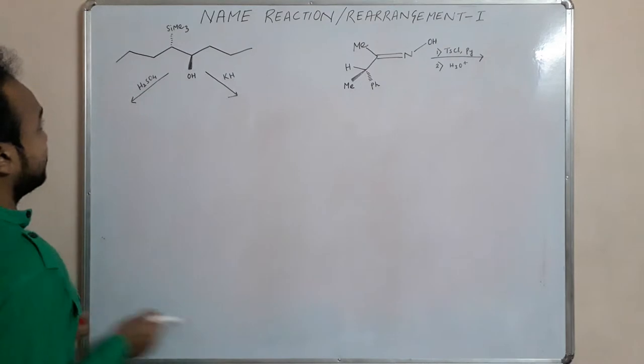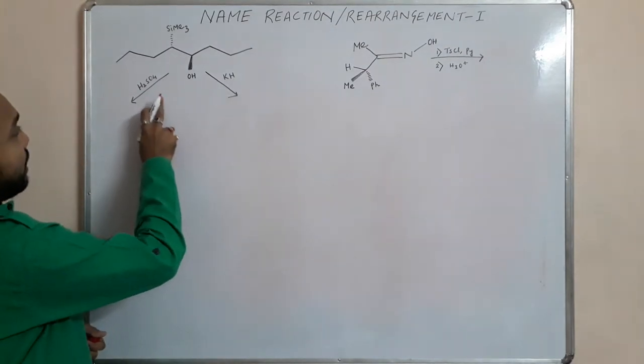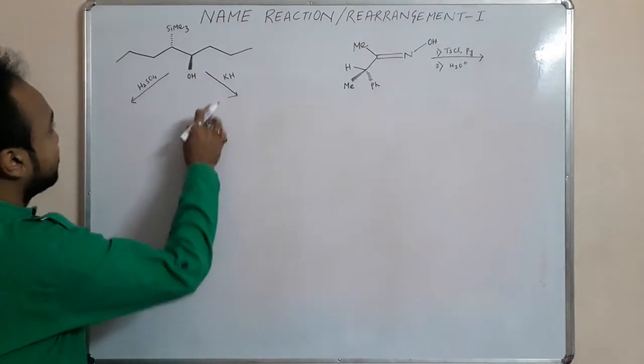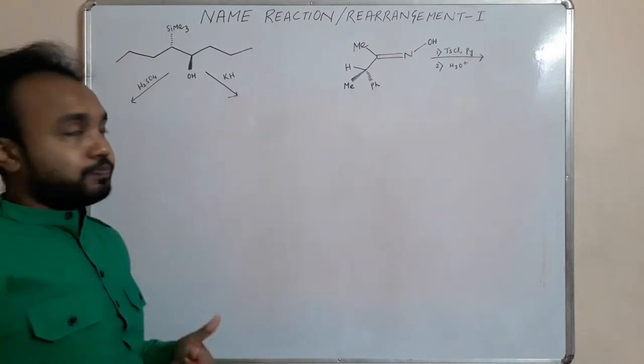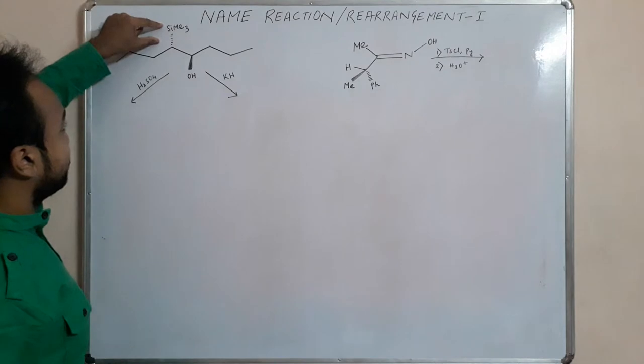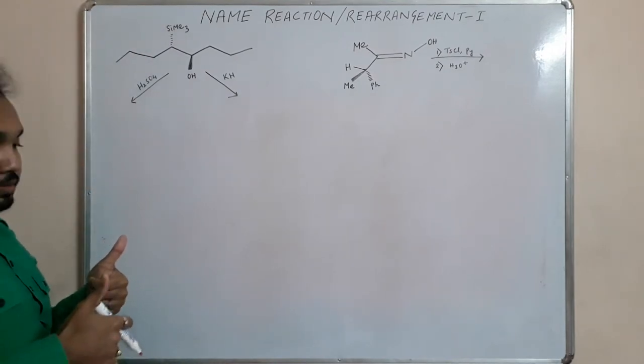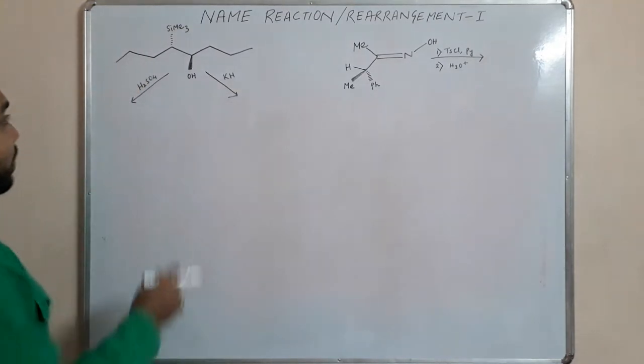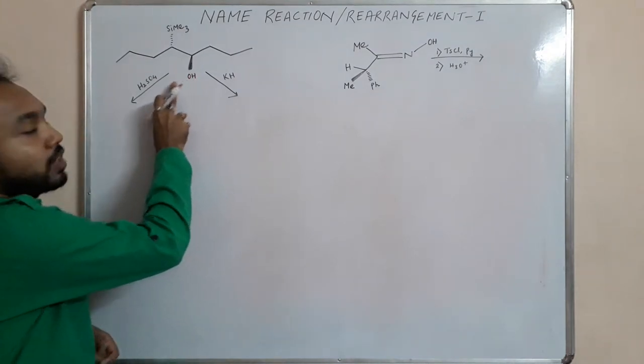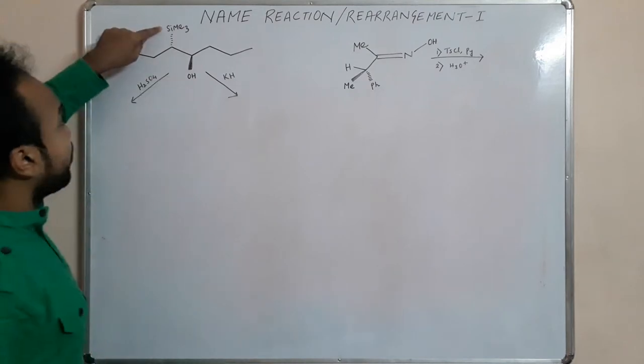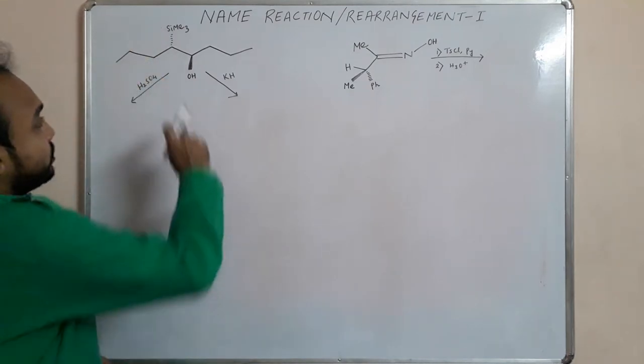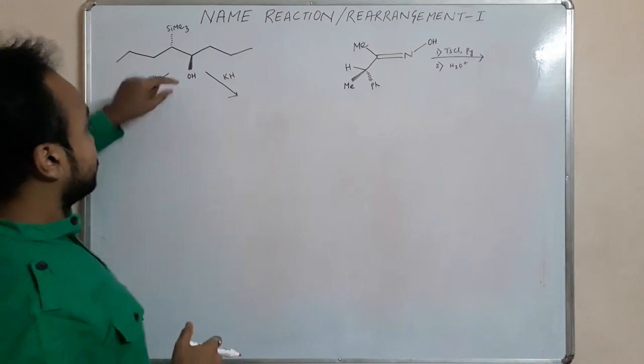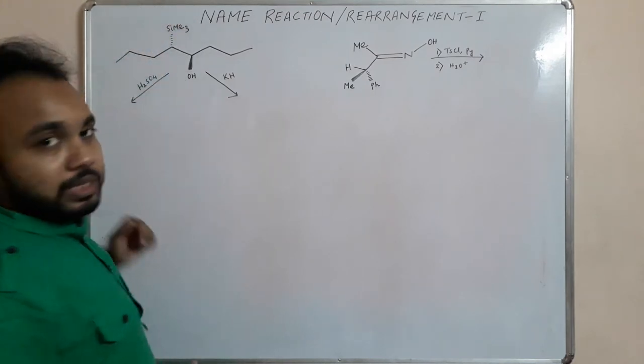In Peterson olefination, there are two conditions: one in presence of acid and another in presence of base. In presence of acid, the OH group and the SiMe3, when they're anti-periplanar, like they're in opposite plane, they get eliminated. But if we add a base, there is a proton abstraction. Due to the strong affinity of oxygen for silicon, this silicon and oxygen come in one plane.